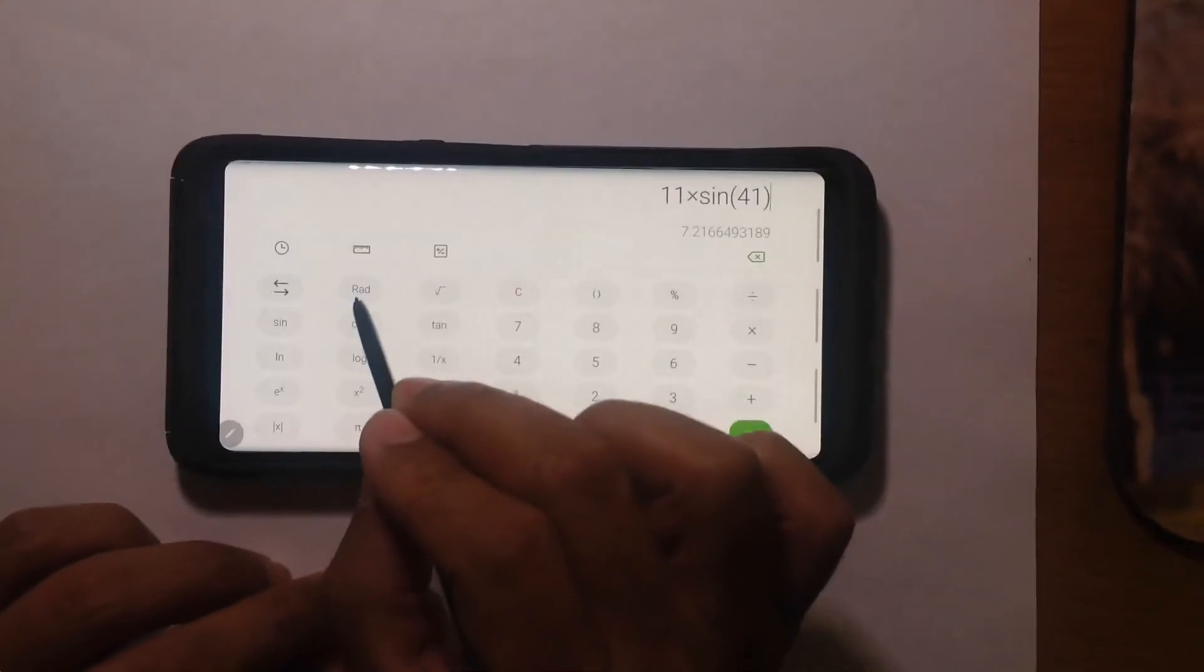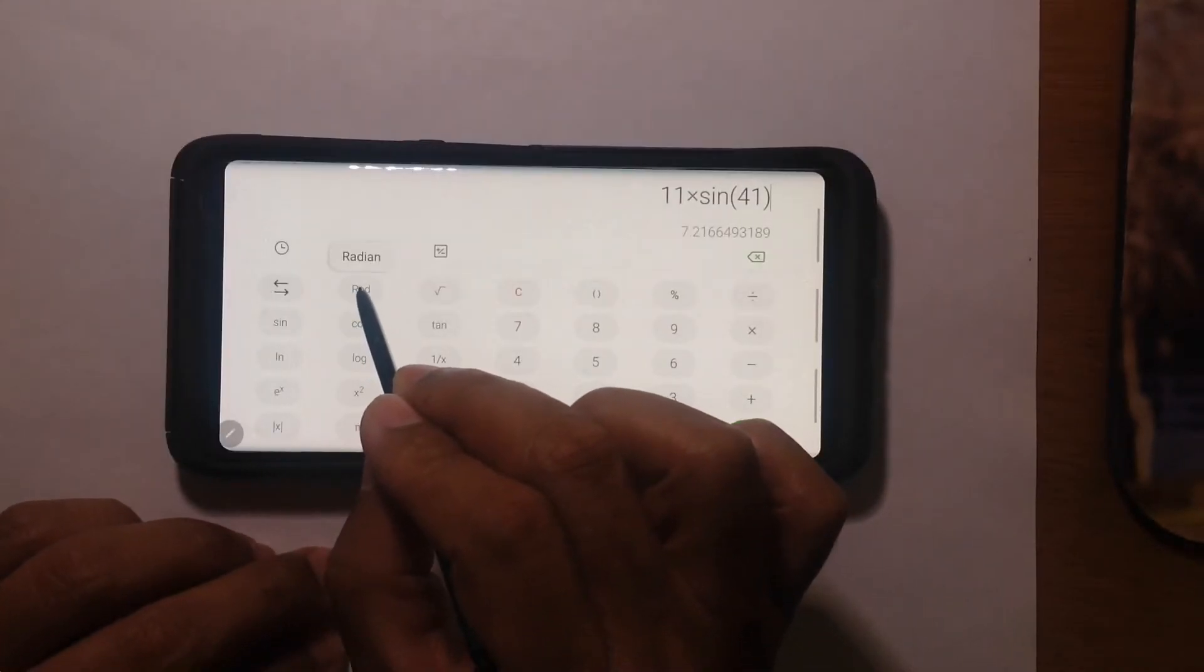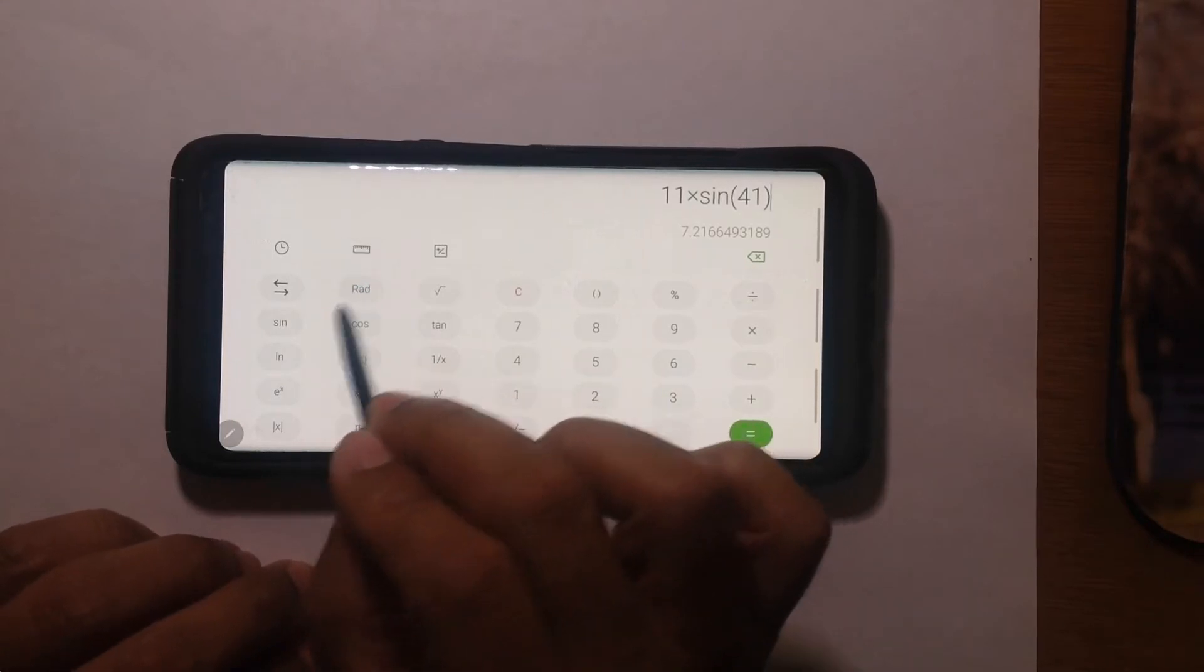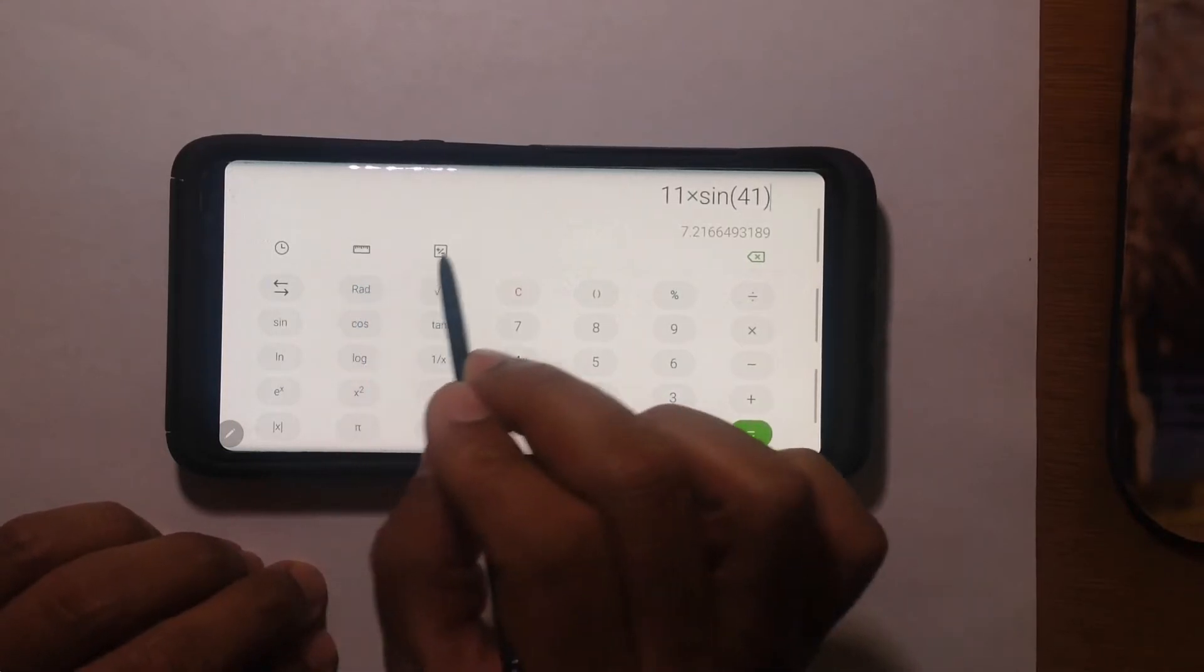Something that I need to mention is that your calculator for this class has to be in degree mode for now. Once you get to pre-calc it's going to be something different—you'll be able to use radian. But watch what happens if I switch this to radian. I'm going to press radian and watch what happens to the answer.